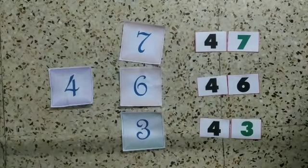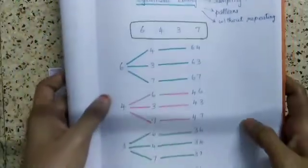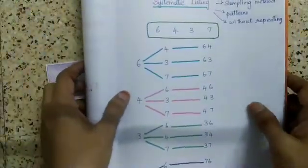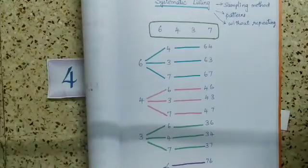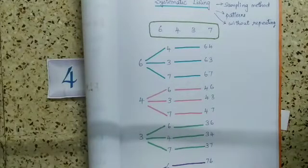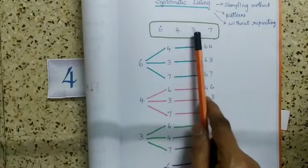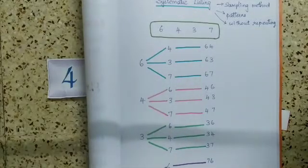Now we are going to see in the paper how we are going to do this. So the same number I have kept here. Here we have same numbers 6, 4, 3 and 7. So we can write like this.